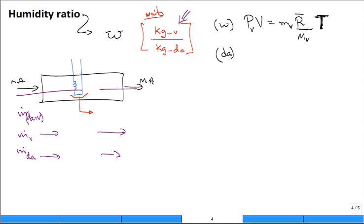Okay, let's do it also for the dry air. So we have the partial pressure of the dry air, some volume, the mass of the dry air, R bar divided by the molar mass of the dry air, temperature.